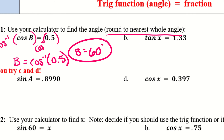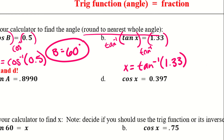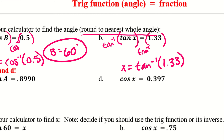Example b: tangent of x equals 1.33. I'm going to take the inverse of tangent on each side, giving x equals tangent to the negative 1 of 1.33. We press second and then tangent — tangent to the power of negative 1 times 1.33 — and x equals 53 degrees.